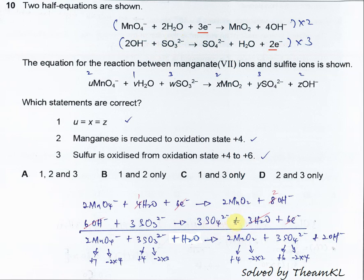After that you will get these two half equations as shown below. Then you need to combine the two half equations. So after combining, the electrons are gone.